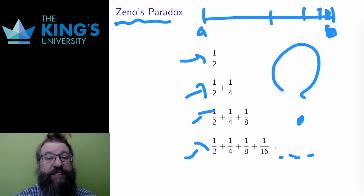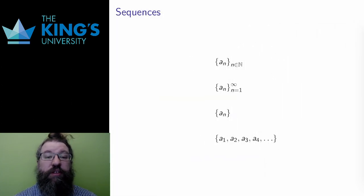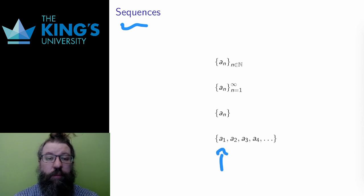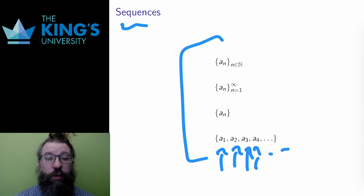So before defining series themselves, I need to start with infinite sequences. An infinite sequence is an ordered set of numbers that are indexed by the natural numbers. These are all notations for infinite series, and in each, the subscript is the index. So A1 is the first number, A2 is the second, A3 is the third, and so on. And the list never ends.